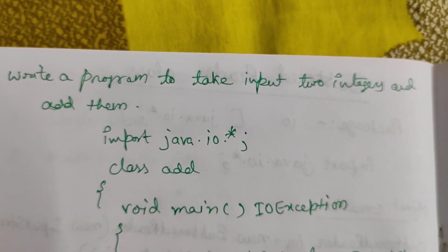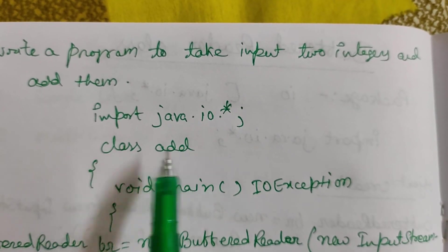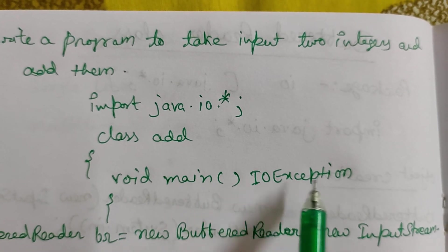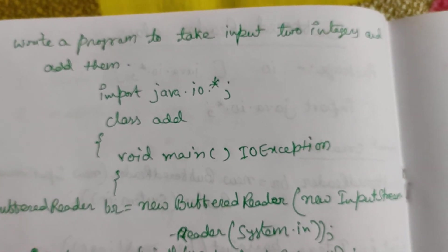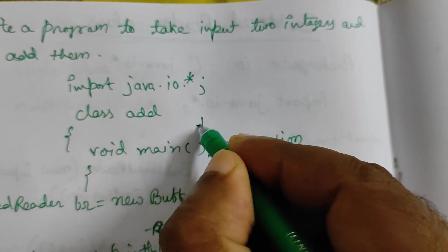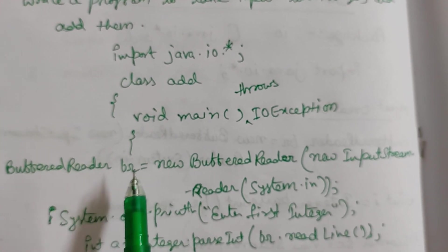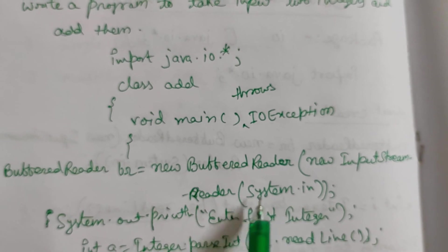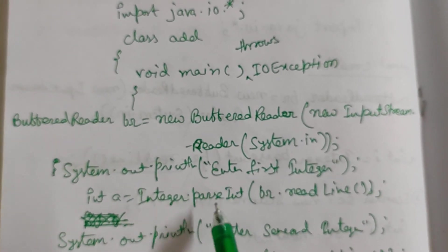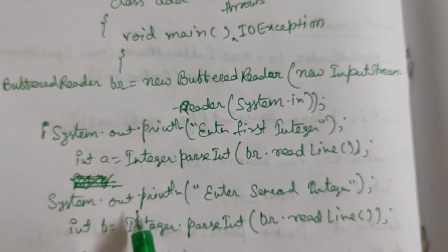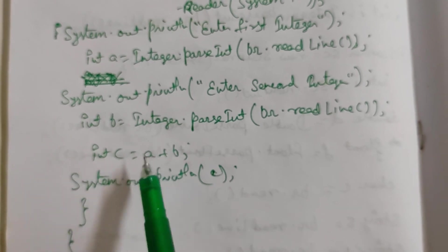Let's write a program to take two integers as input and add them. First, import java.io.*; then class Add, then void main. After main, we write throws IOException — because if any input/output exception occurs, it throws that exception. Then: BufferedReader br = new BufferedReader(new InputStreamReader(System.in)). Then for the first integer: int a = Integer.parseInt(br.readLine()), and for the second: int b = Integer.parseInt(br.readLine()).